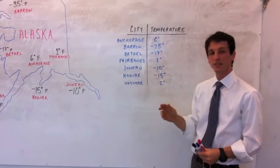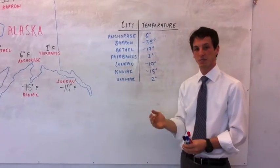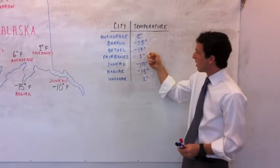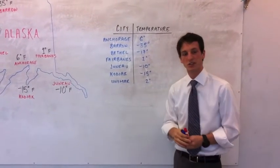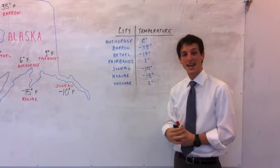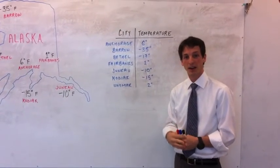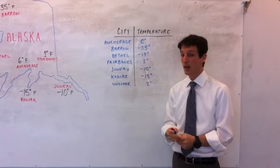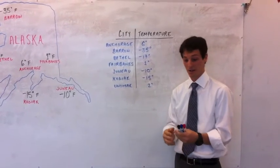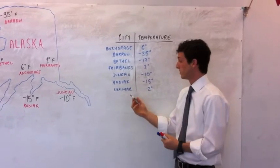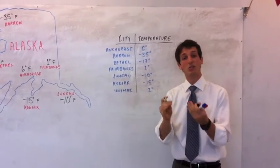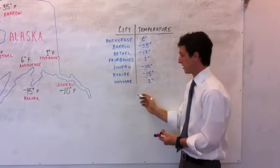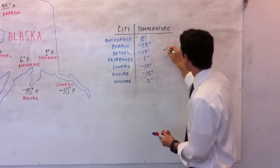On this list, let's find the coldest temperature. We'll go through and the number that stands out, as we discussed earlier, is Barrow at negative 35 degrees Fahrenheit. It is so cold in Barrow. If you didn't have a jacket, you would not want to be outside in Barrow, Alaska. So what I'm going to do right here is write the lowest or least integer in this set of integers. It is negative 35.